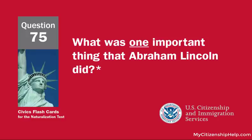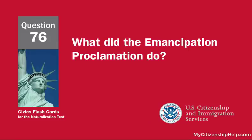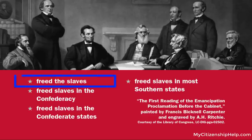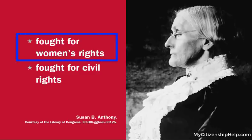What was one important thing that Abraham Lincoln did? Freed the slaves. What did the Emancipation Proclamation do? Freed the slaves. What did Susan B. Anthony do? Fought for women's rights.